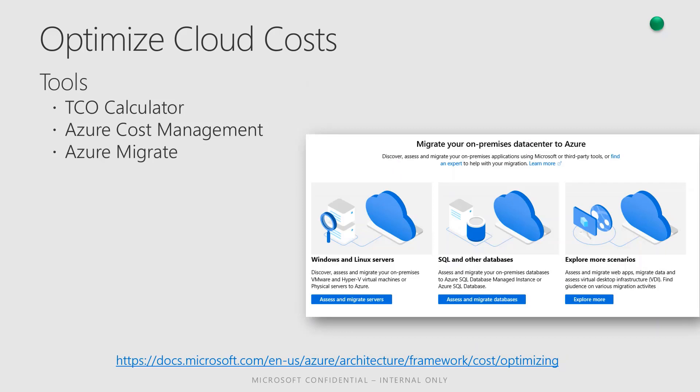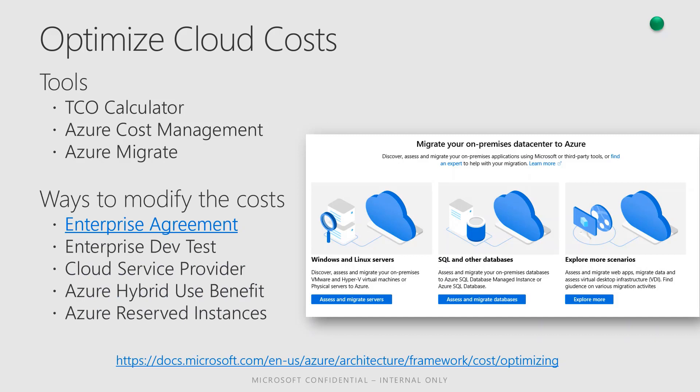Azure Migrate, which we've discussed in previous sessions, is another tool. Different ways to modify cost include using an enterprise agreement. One thing that very few people know about is enterprise dev/test subscriptions, which offer special lower rates on Windows Virtual Machines, Cloud Services, SQL Database, HD Insight, App Service, and Logic Apps — simply by checking a box in the EA Portal, or Enterprise Agreement Portal.